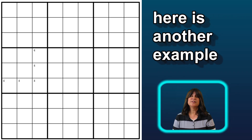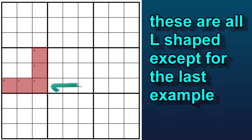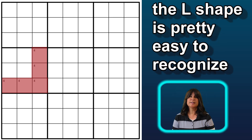Here is another configuration — same idea. The number 4 is restricted to exactly one row and one column in the block. This time it's the last row and last column in the block. The configurations I've shown you of one row and one column form L shapes or right angles to each other. They can be upside down or backwards as well, but the L shape or right angle shape is pretty easy to recognize.